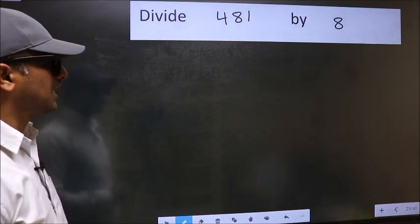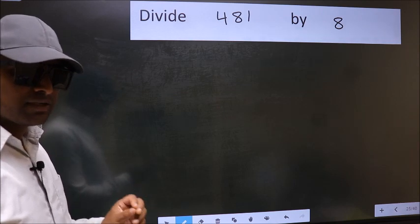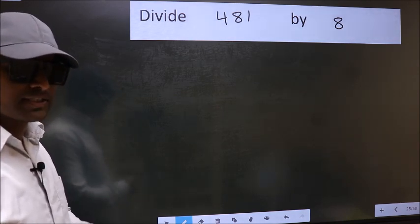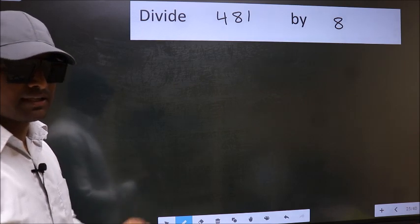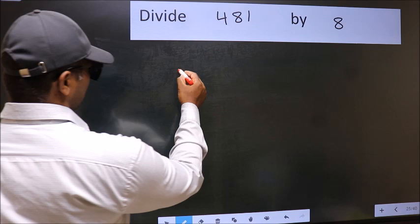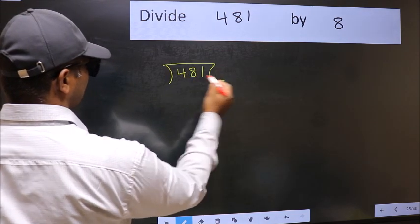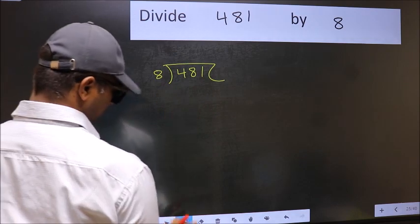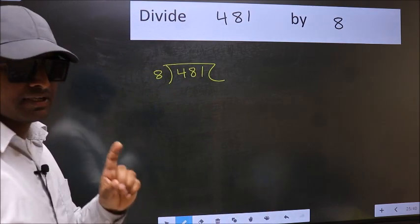Divide 481 by 8. While doing this division, many do this mistake. What is the mistake that they do? I will let you know. But before that, we should frame it in this way. 481 and 8 here. This is your step 1.